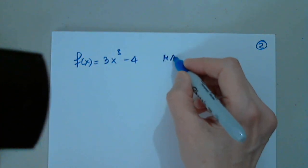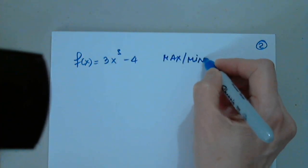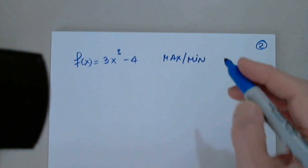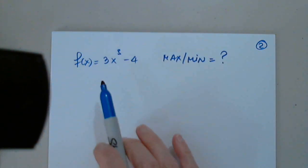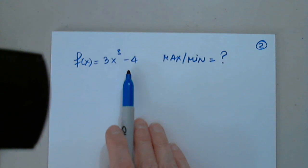And we're asked to find max min. That's the question. Find max min for this function. Okay, so what do I have to do first?